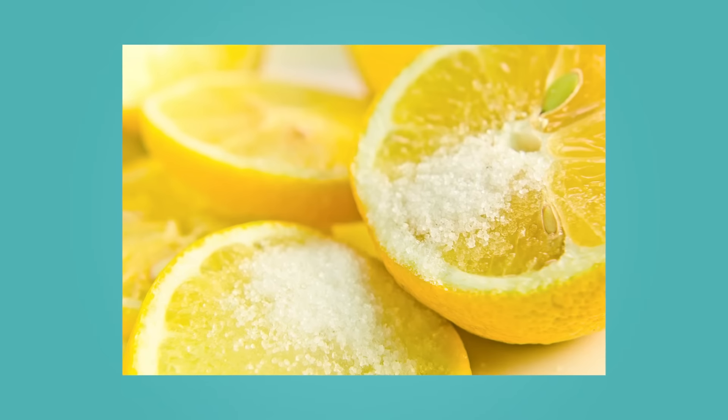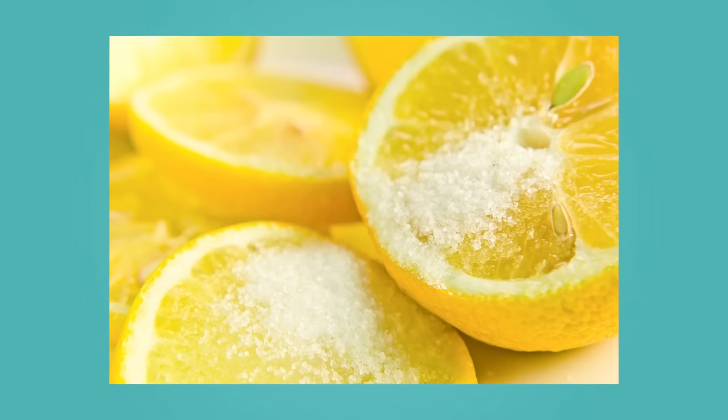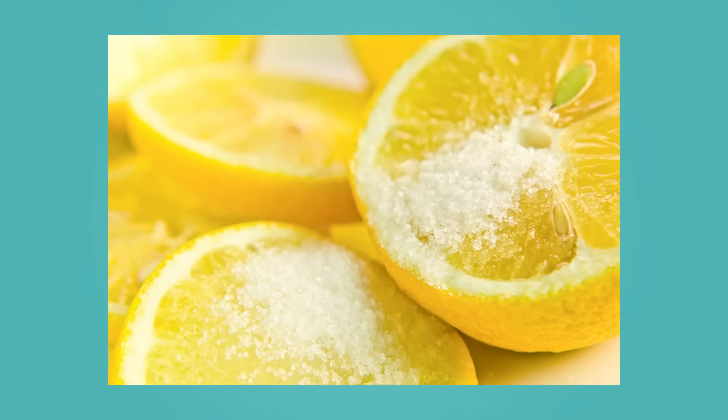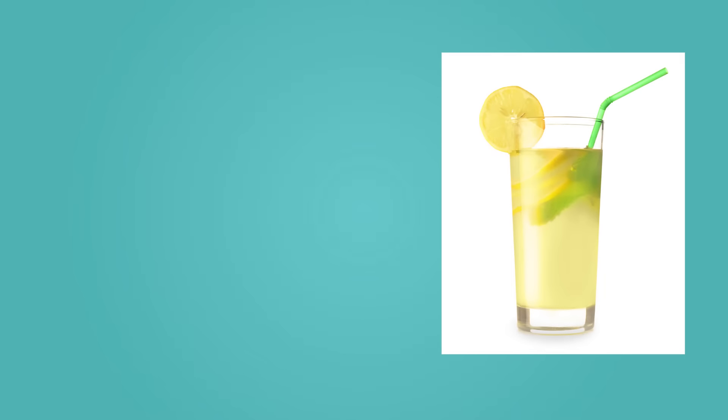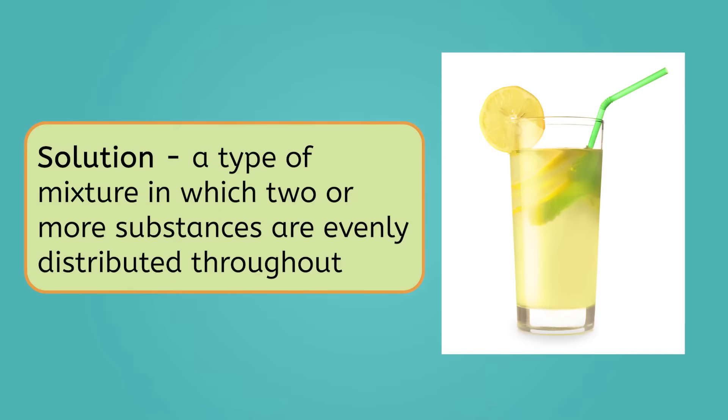There are also different kinds of mixtures. For instance, what's the difference between this mixture of lemons and sugar and this mixture of lemons and sugar? In this mixture, the lemonade, you can't see the individual substances that were combined to make it. That's because lemonade is a solution. A solution is a type of mixture in which the substances are evenly distributed or spread throughout it.